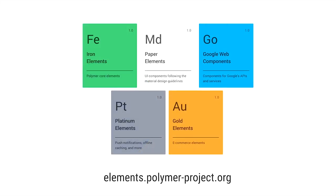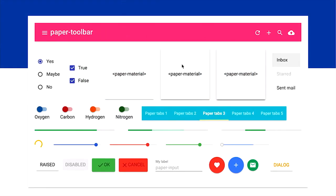The Polymer team, in addition to working on the library, builds sets of components. With Polymer 1.0, we dramatically expanded the scope to include five element product lines. The iron elements are the basic building blocks for what you might need to build an application. The paper elements were the reference implementation for material design — all the components like buttons, ripples, dropdowns, and menus to implement Google's material design language on a web application.